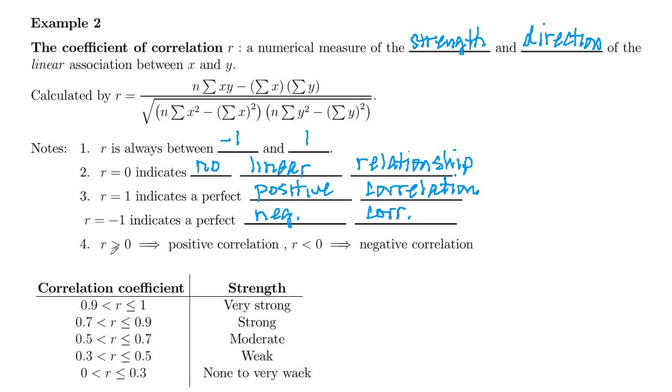If R is greater than zero, that indicates a positive correlation. R less than zero indicates a negative correlation. So the sign of the correlation coefficient indicates whether the slope of the regression line is positive or negative. And then as to the strength, so that's direction.